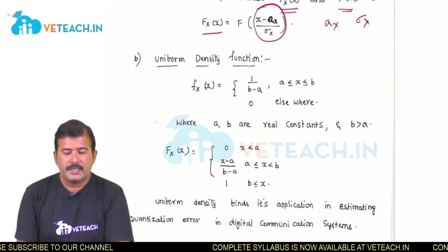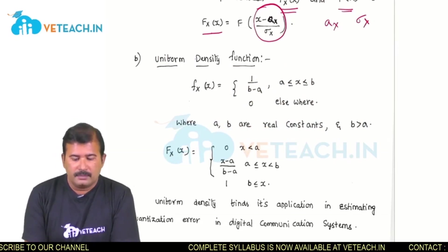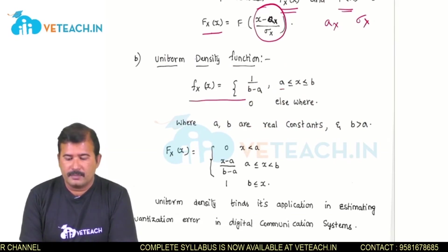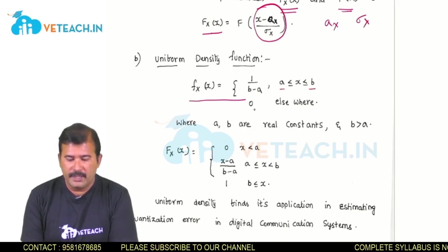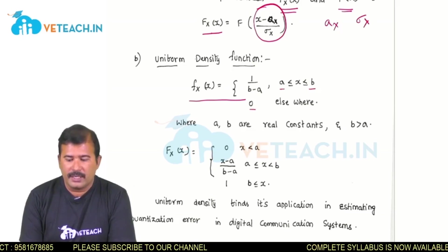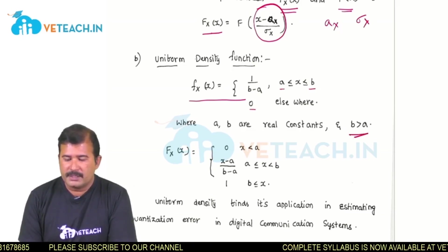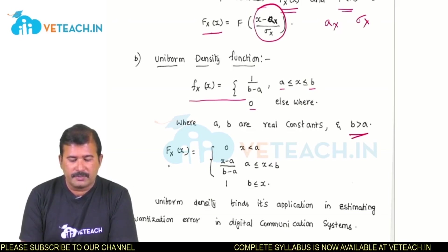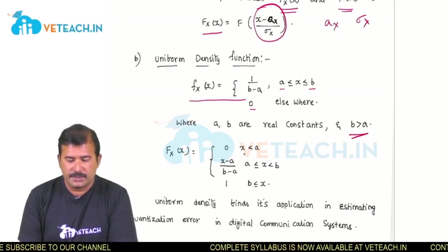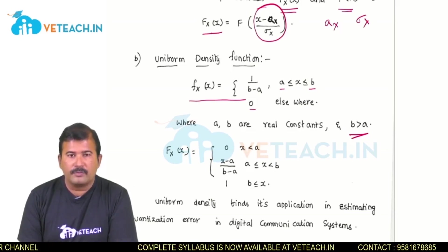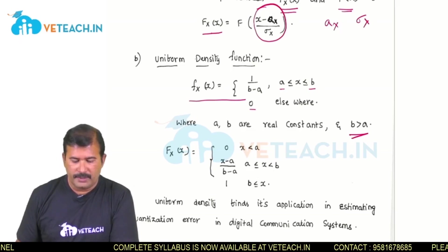The next density function is the uniform density. Its density function is 1 by b minus a, where x ranges from a to b, and 0 for the remaining values of x, where a and b are real constants with b greater than a. The distribution function is 0 for x less than a, x minus a by b minus a for x between a and b, and 1 for x greater than or equal to b.